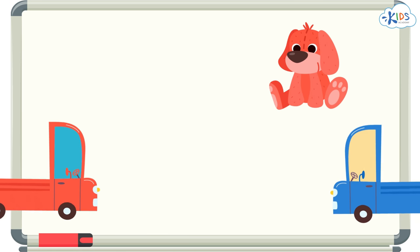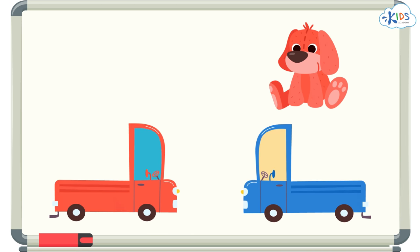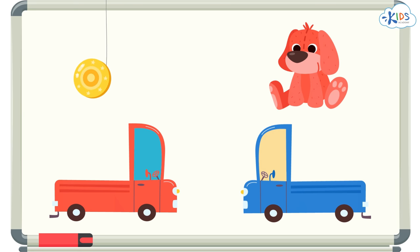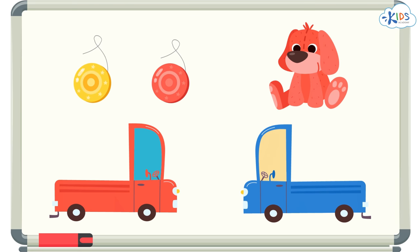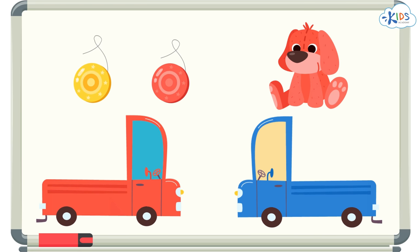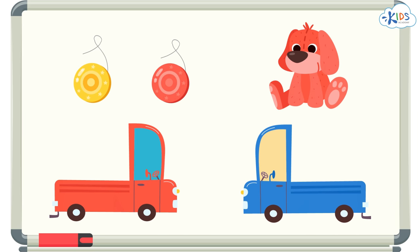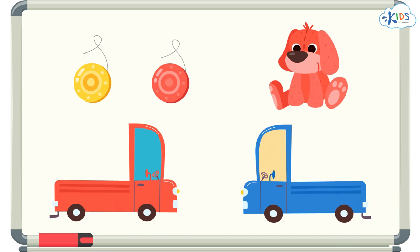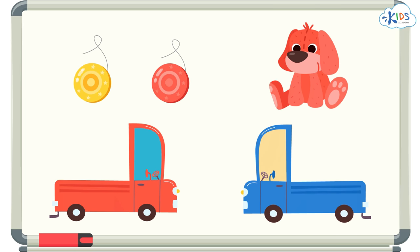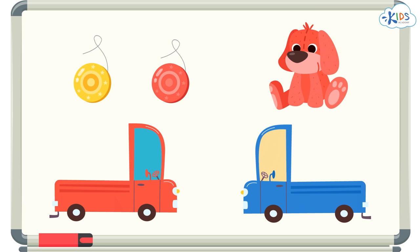Let's take a look at some toys. Look at all of these cool toys. I can see cars, yo-yos, and even a stuffed animal dog. One way we can sort or group these toys is by color.